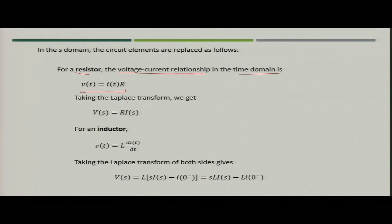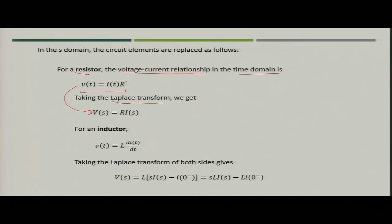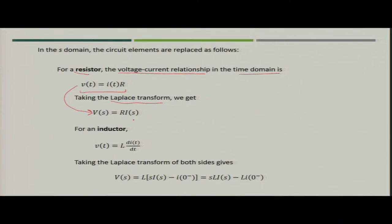If you take the Laplace transform, the time domain equation gets converted into S domain. V(t) will become V(s), R is a constant quantity so there is no change, and I(t) will be converted into I(s). So V(t) = I(t)·R becomes V(s) = I(s)·R in S domain — this is what we get when we convert a resistor into S domain.